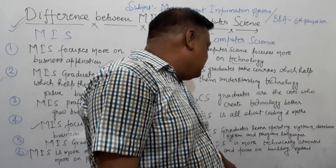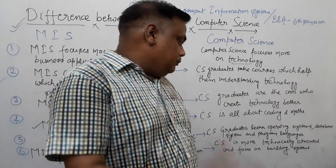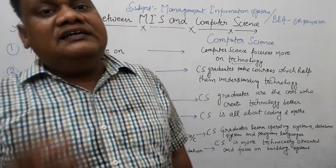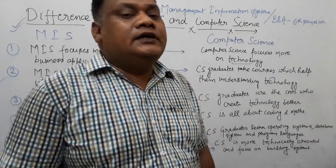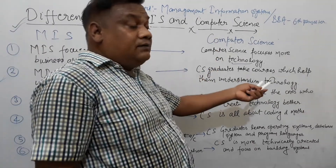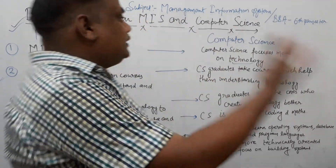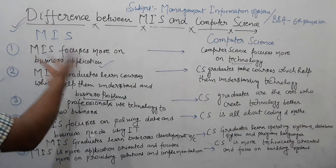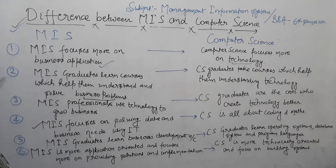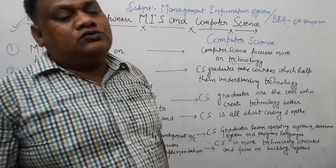CS is more technically oriented and focused on building systems. SDLC — System Development Life Cycle — is a key concept. Information in CS is more scientific. CS is used within organizations and focuses on software use and development.